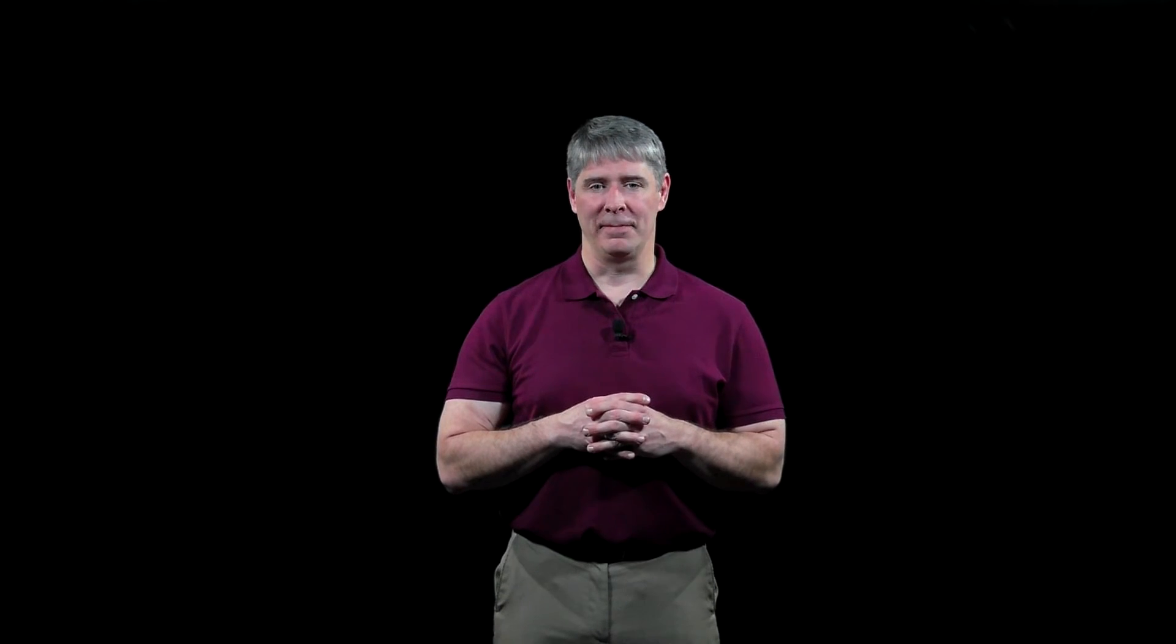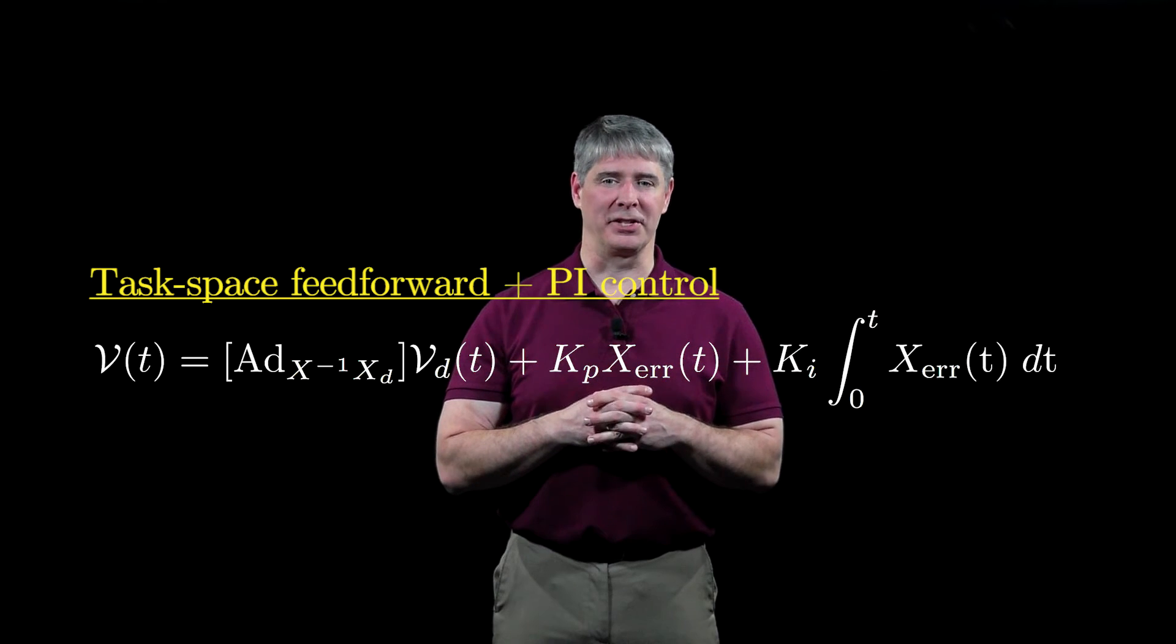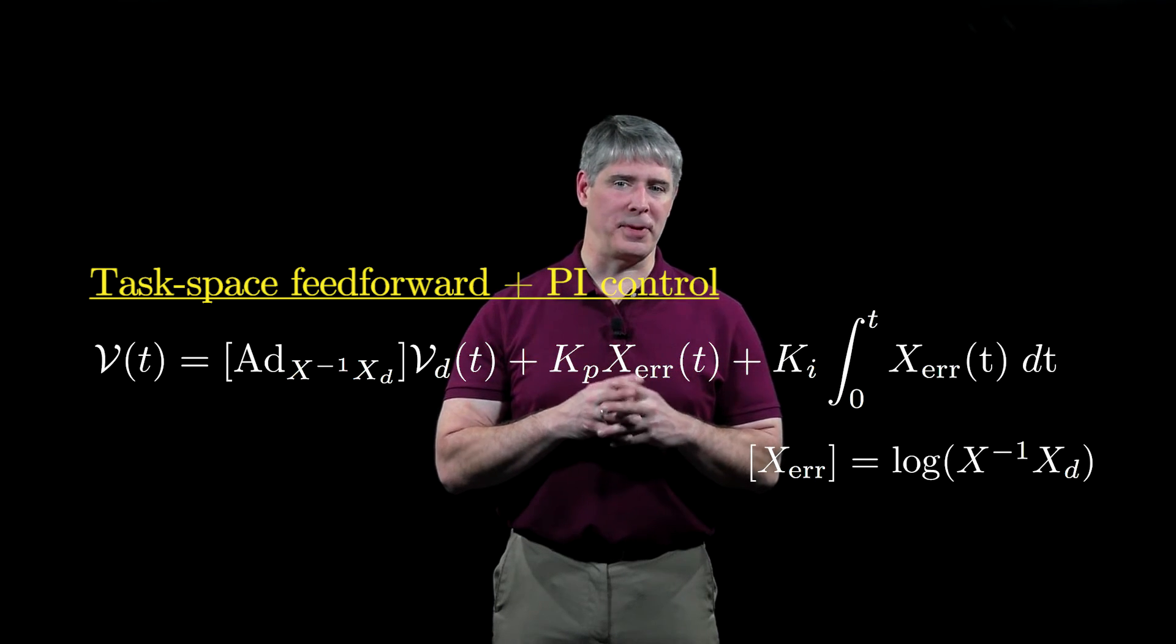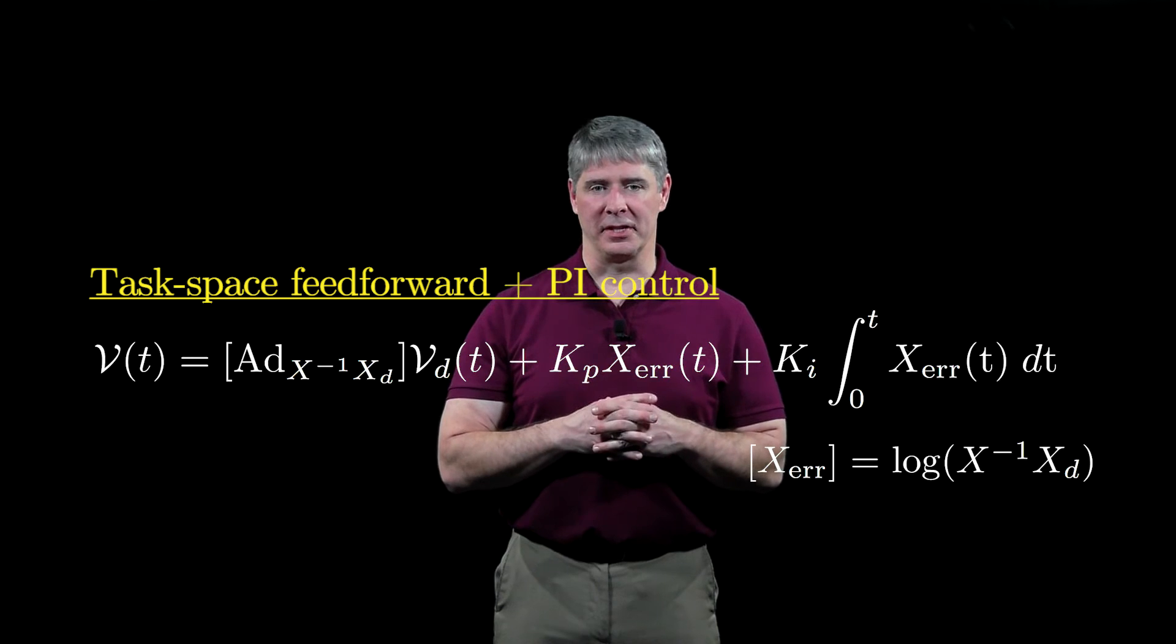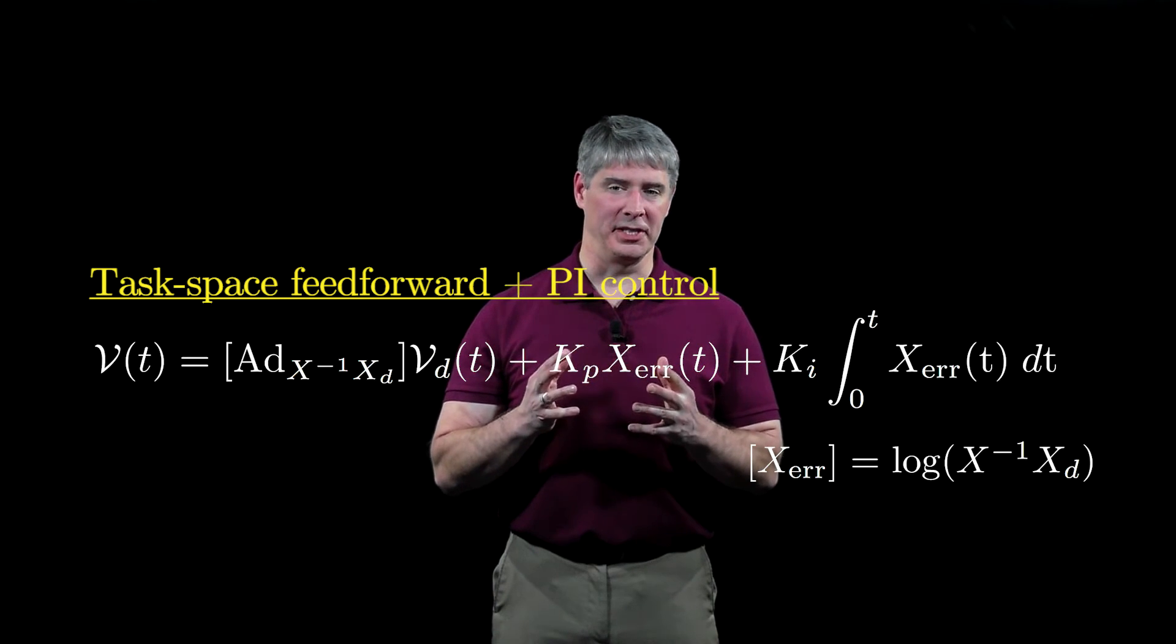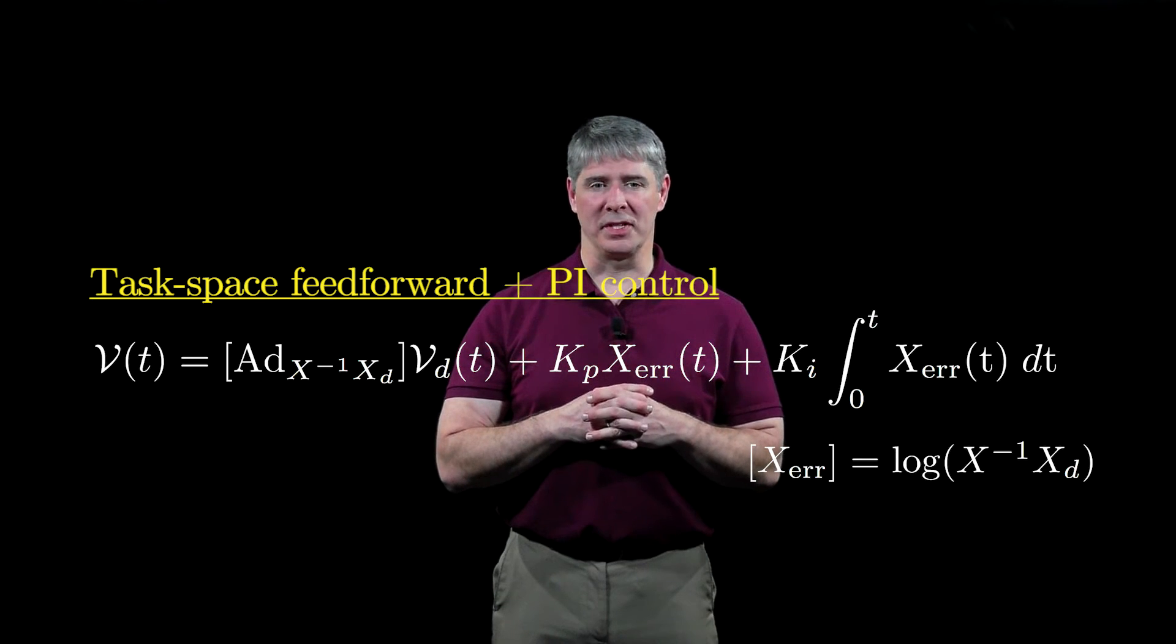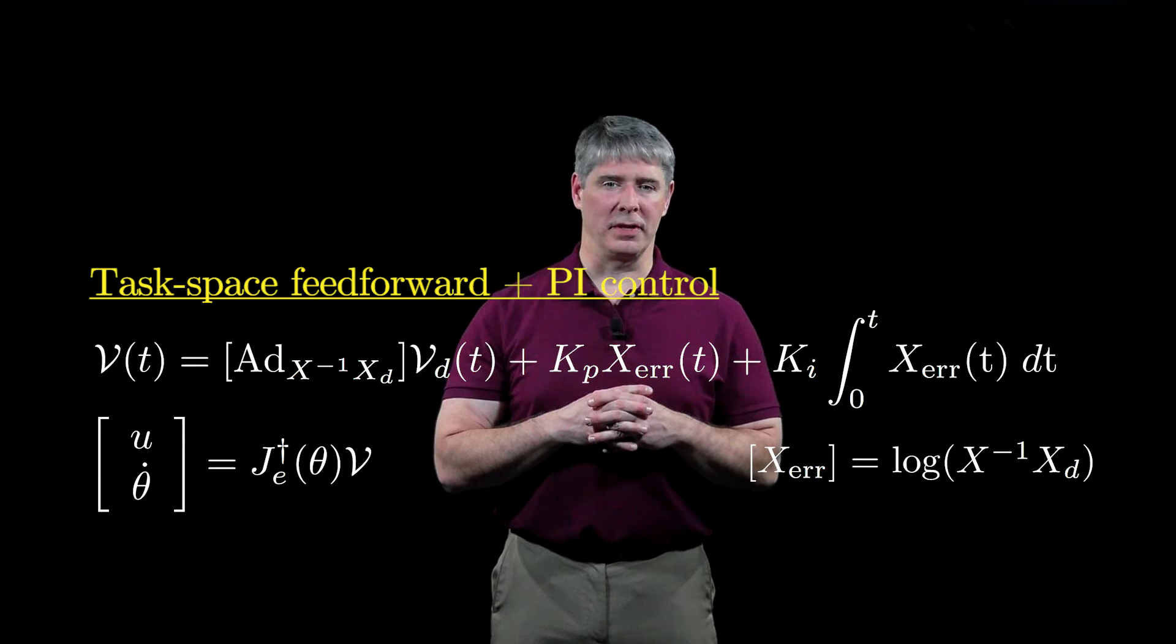Now that we have the full mobile manipulator Jacobian JE, we can choose the task space feedforward plus PI controller from Chapter 11. Remember that Xerror is the twist expressed in the end effector frame that takes the actual end effector configuration to the desired configuration in unit time. Once we've calculated the commanded twist V, expressed in the end effector frame, the wheel and joint velocities are calculated using the pseudo-inverse of JE.